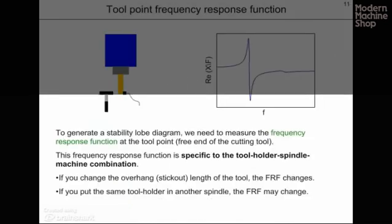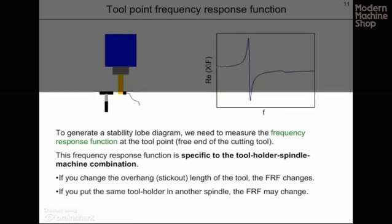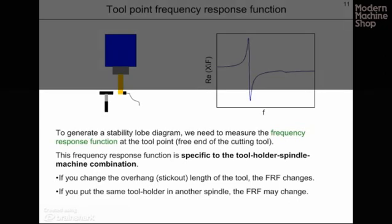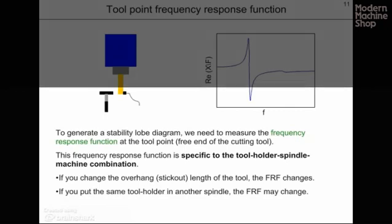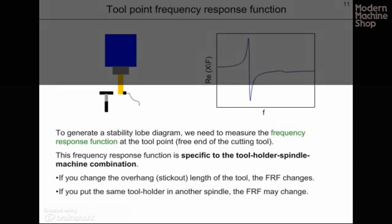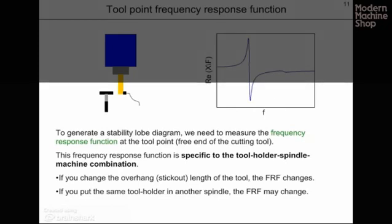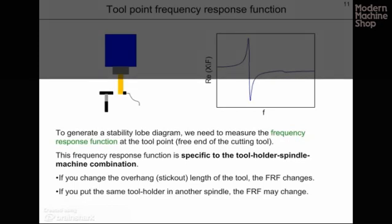In order to generate a stability lobe diagram, we need to measure the frequency response function at the tool point, or the free end of the cutting tool. We perform this operation by exciting the tool with a modal hammer and recording the response with a transducer such as an accelerometer. This measured frequency response function is specific to the tool, holder, spindle, machine combination selected for testing. It's important to note that if you change the overhang or stick-out length of the tool, or place the same tool-holder combination in another spindle with different dynamics, the FRF may change.